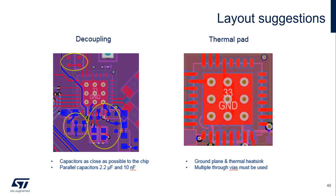Here are some more layout examples. On the left, you can see where we put our decoupling capacitors — layout 101: you want your capacitors as close to the chip as possible. We typically use a 2.2 microfarad and a 10 nanofarad in parallel at each of these pins. To the right, you can see that we've laid out a generous thermal pad with vias to dissipate heat in the device. It's very common that you may be dissipating a lot of heat in these devices, especially if you match towards a lower impedance, so it's very important to keep the device cool through the ground plane and thermal heat sink.